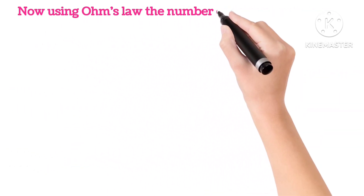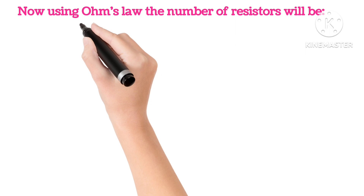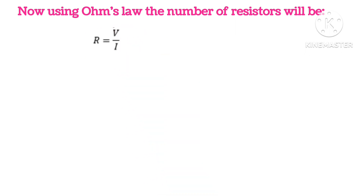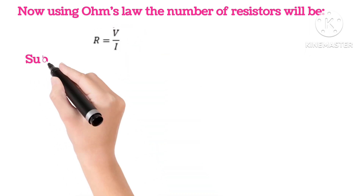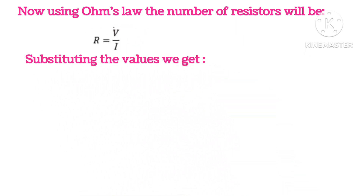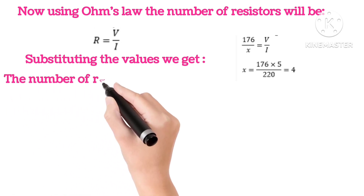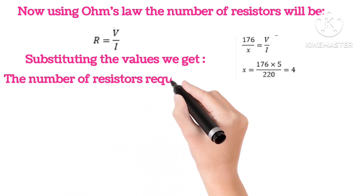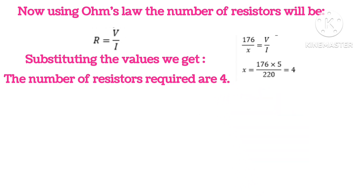Now, using Ohm's law, R equals V upon I. Substituting the values, we get X equals 4. So the number of resistors required are 4.